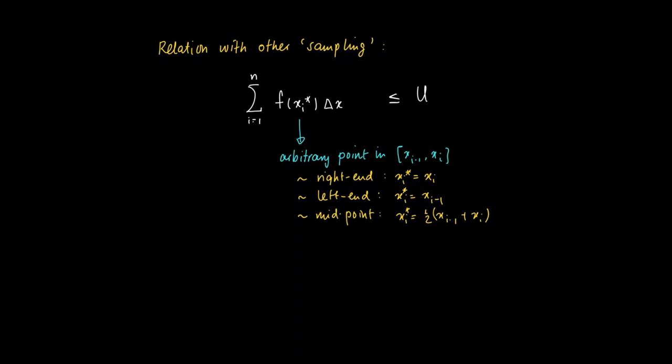This is an arbitrary selection, not depending on the function value, but in the upper sums we chose the maximum over f, and in the lower sums we've chosen the minimum on an interval. So the lower sums are always smaller than an arbitrary selection, and this is again smaller than the upper sum.